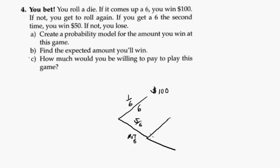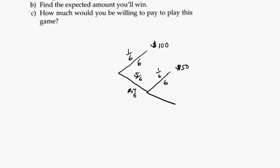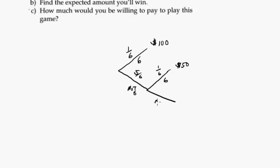Then we roll again in that case. And if we get a 6, the probability again, each roll of the die is independent, as you can see from the tree, and we get $50. And then if we don't get a 6, the probability of that is 5 out of 6, and we don't win anything. We get $0.